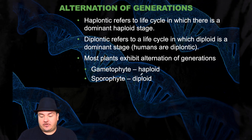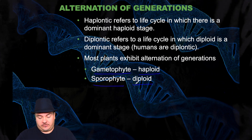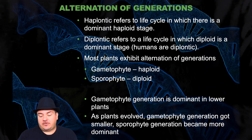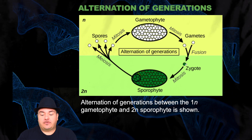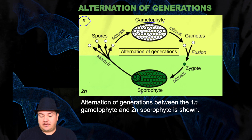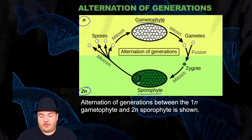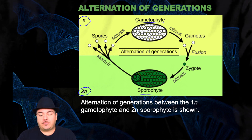The haploid generation is called the gametophyte generation, and the diploid generation is called the sporophyte generation. The gametophyte generation is the dominant generation in the lower plants, and as plants evolved the gametophyte generation got smaller and the sporophyte generation became more dominant. The basic concept: the gametophyte is haploid, and their kids — the next generation — is the sporophyte, which is diploid. The sporophyte then makes the next generation, going back to the haploid gametophyte, and so on.